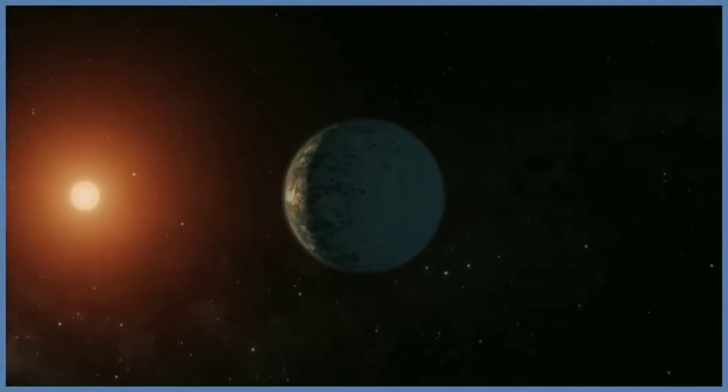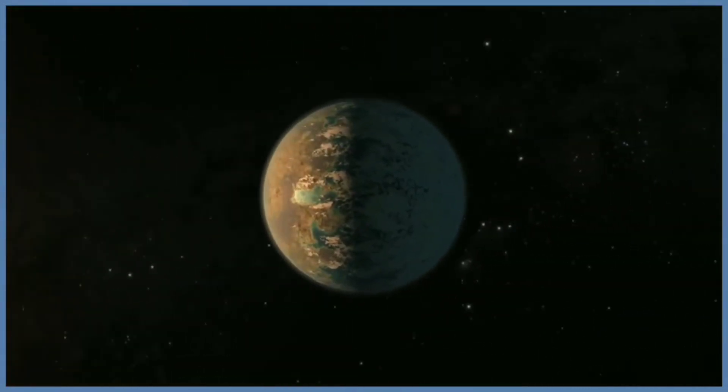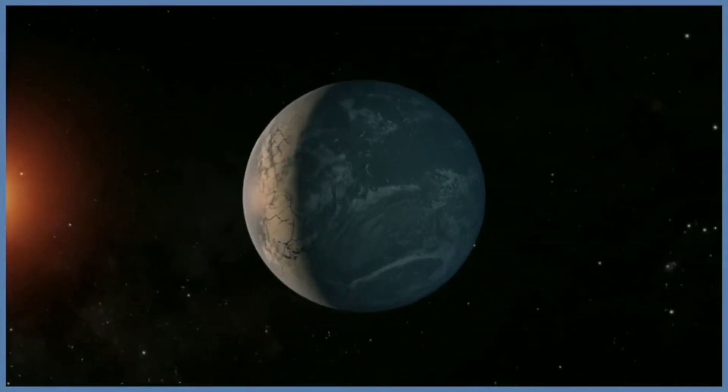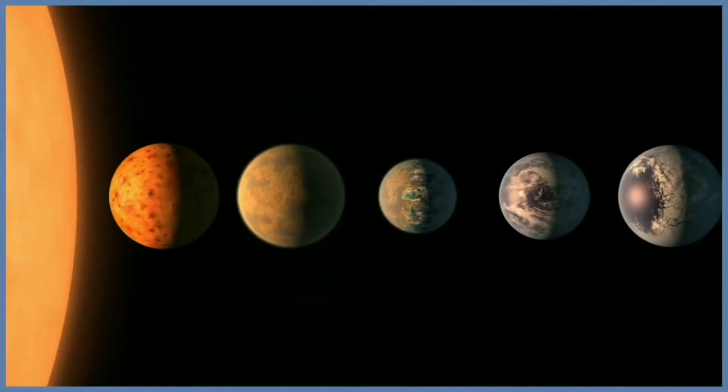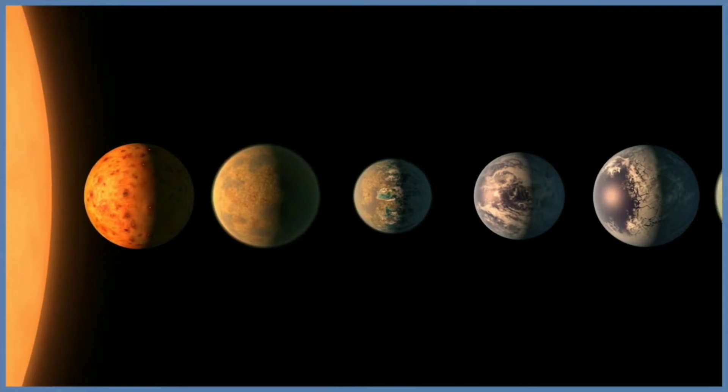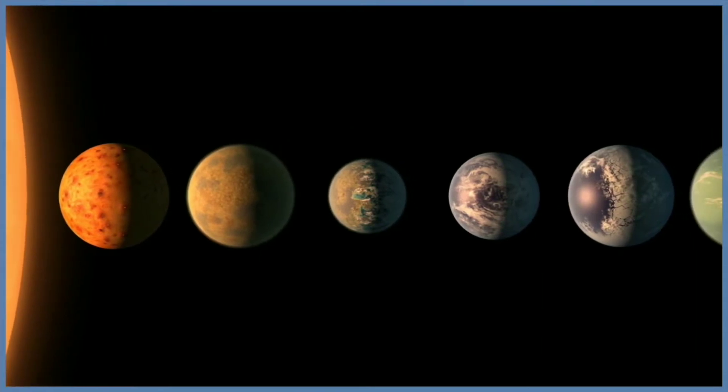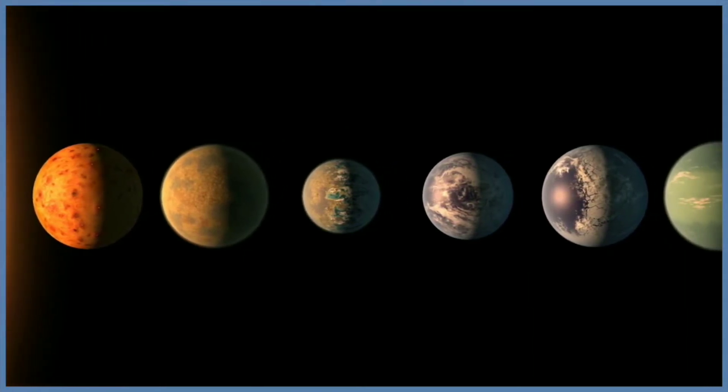This is the area around a parent star where a rocky planet is most likely to have liquid water. The discovery sets a new record for the greatest number of habitable zone planets found around a single star outside of our solar system.